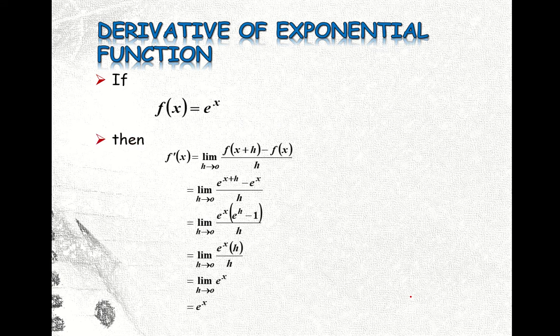We have here the derivation of the derivative of this function e to the x. So again, using this formula, we have f of x plus h minus f of x divided by h, the limit of this as h approaches to 0. So substituting, changing our f of x plus h into e to the x plus h, and substituting f of x equal to e to the x, so we have this divided by h.